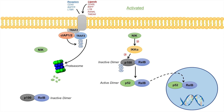Once we have this active P52-REL-B dimer, it can translocate into the nucleus and induce the expression of non-canonical NF-kappa-B target genes. Some of these include BCL-2 and BCL-XL, which are anti-apoptotic proteins involved in B-cell maturation and B-cell survival. P52 and REL-B also inhibit some gene expression, including BIM, which is a pro-apoptotic protein. Because P52-REL-B increases BCL-2 and BCL-XL while inhibiting BIM, this promotes cell survival — which is why this pathway can be involved in many cancers, specifically immune cancers and other immune pathologies.